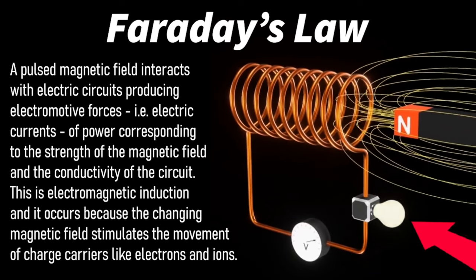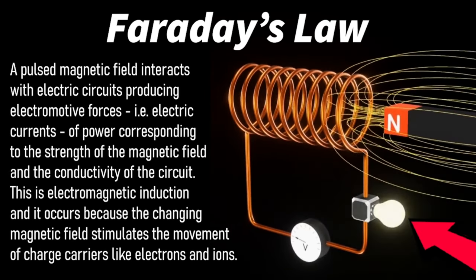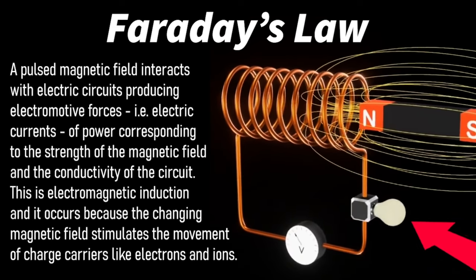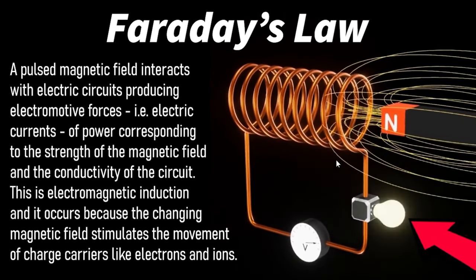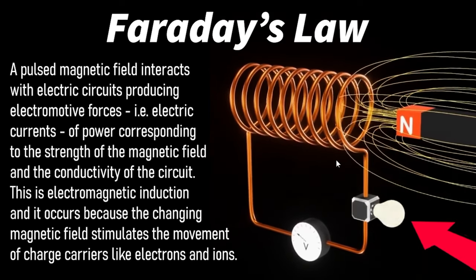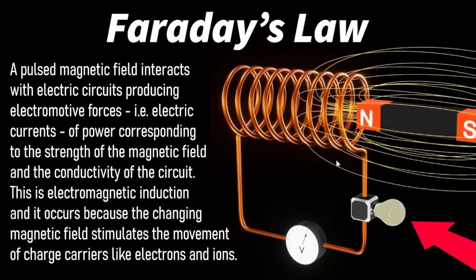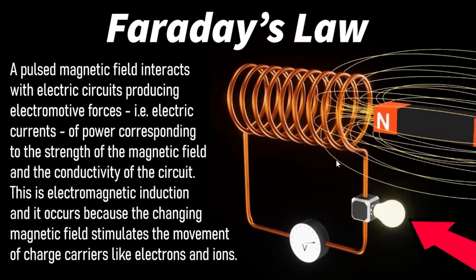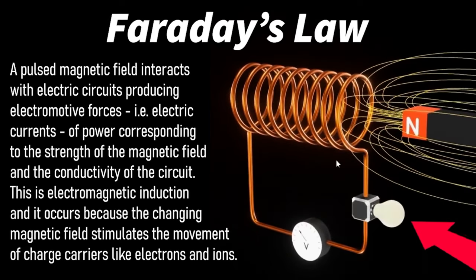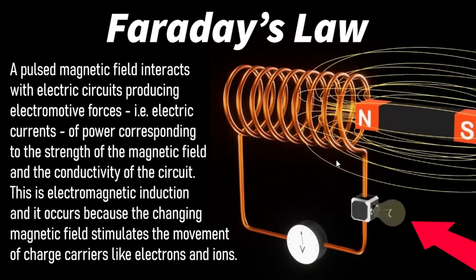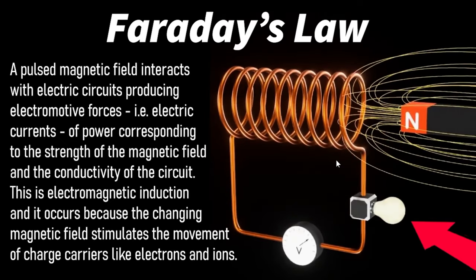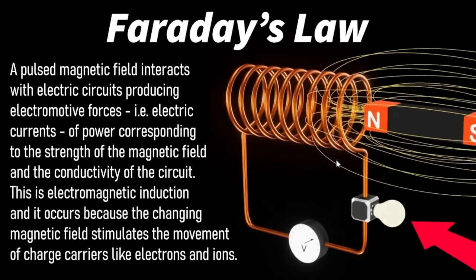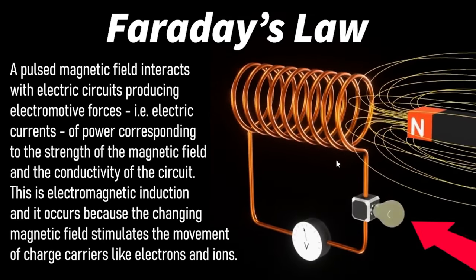There's also Faraday's law. We know that magnetic fields induce electric currents in conductive materials. A pulsed magnetic field — like these gigahertz fields, or even the power grid at 50/60 hertz, or Schumann resonances — anything that's a pulsed field will interact with an electric circuit and produce electromotive forces, these electric currents. The power of these electric currents corresponds to the strength of the magnetic field and the conductivity of the circuit. We're highly conductive and we have all these circuits in our body — our entire body is one circuit, like the chakra system — plus circuits within your brain, neural circuits, your heart.